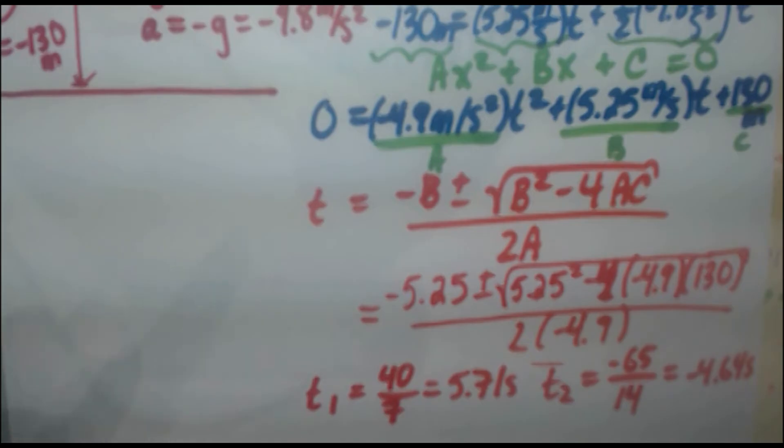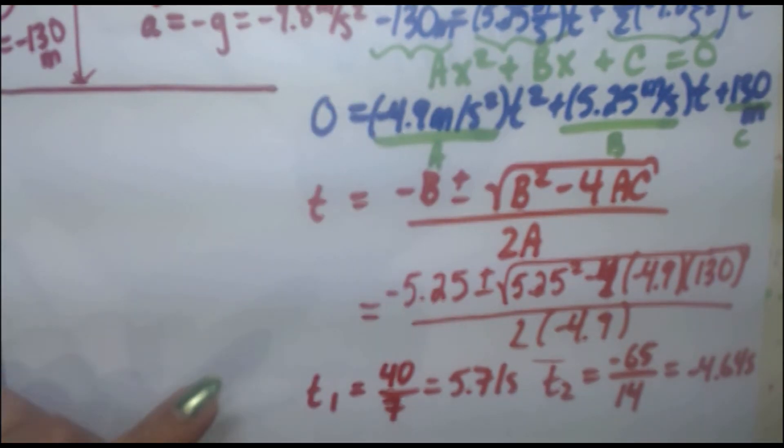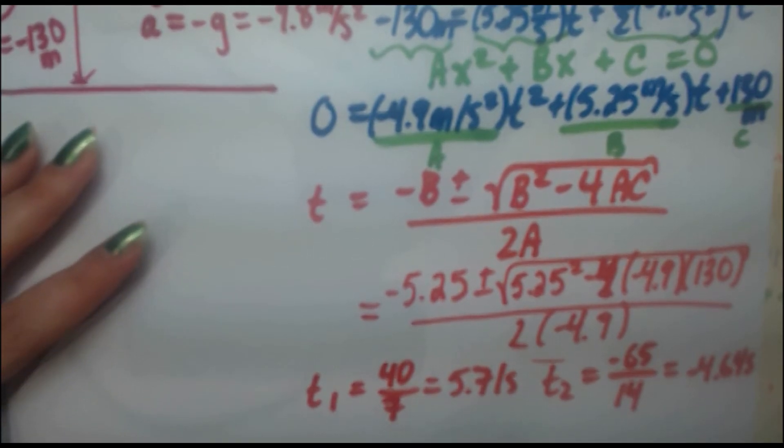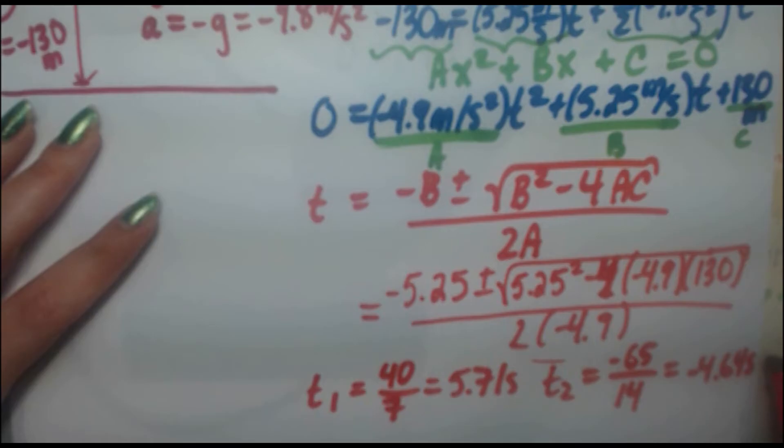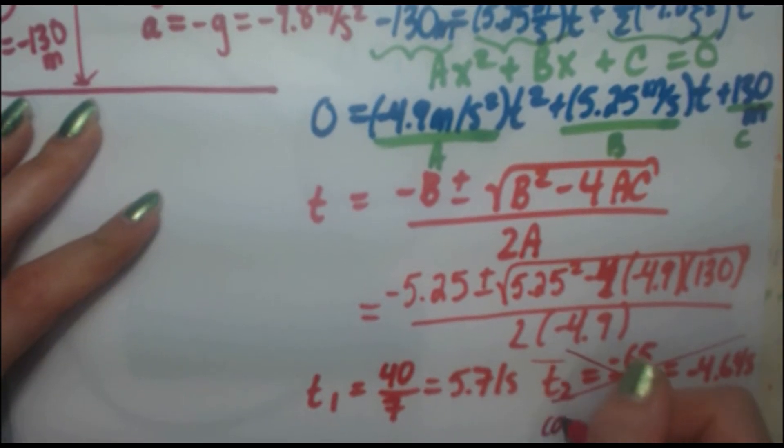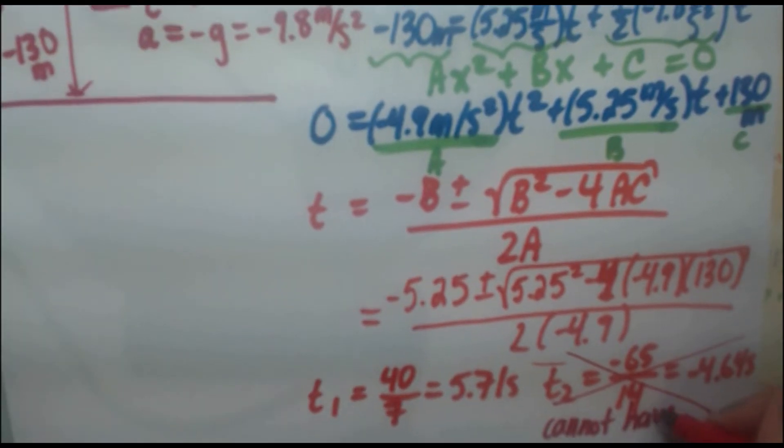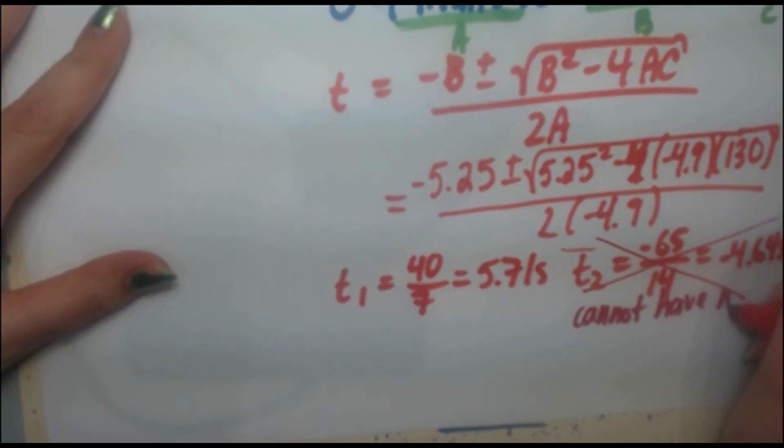Now, with any quadratic formula, because it's a power of 2, you're going to get two solutions. That's just the nature of the graph. Now, it's up to you to decide which solution is correct, which one makes sense. So hopefully one of these solutions immediately jumps out of the page as not making sense. And if you chose that to be the negative time, you are correct. So you cross that out. We cannot have negative time.